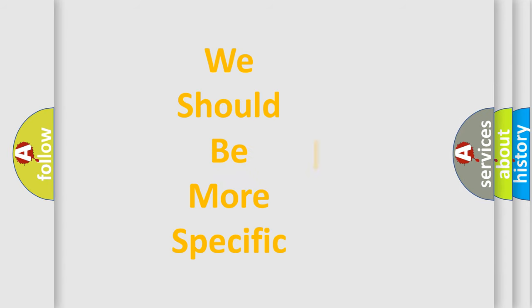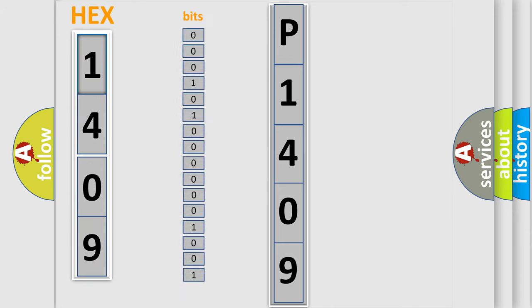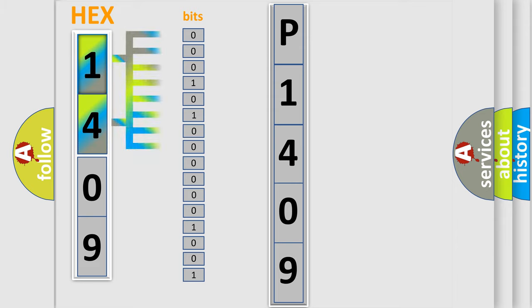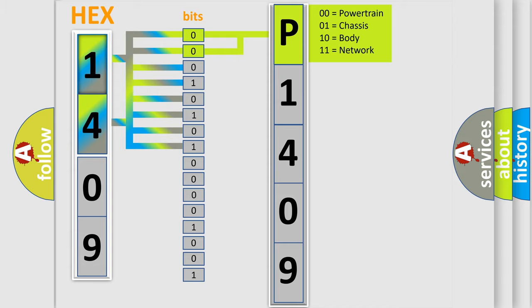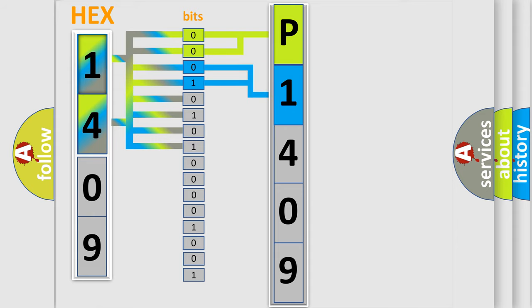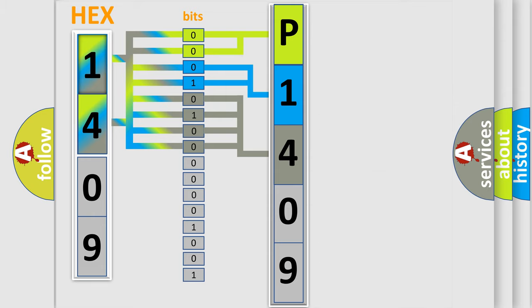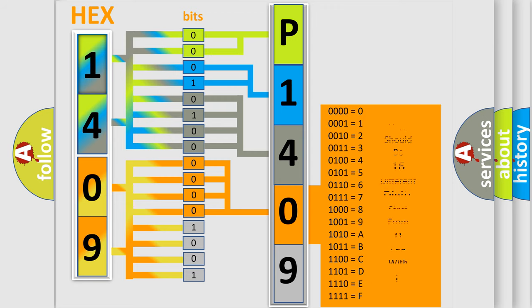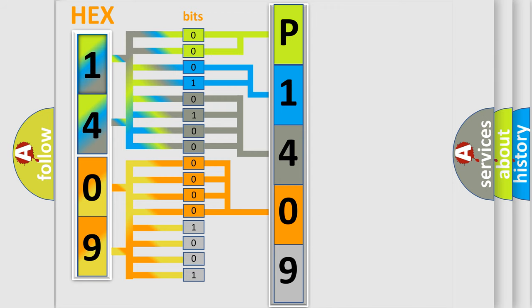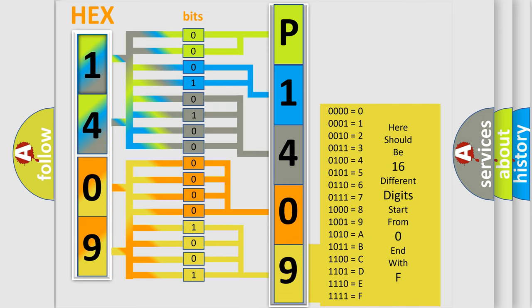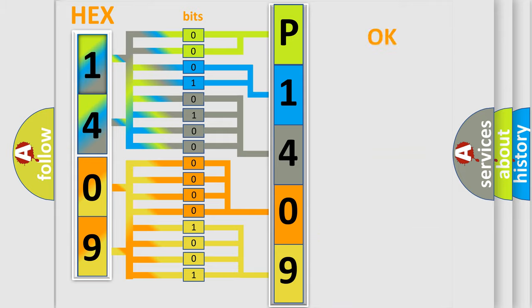The following demonstration will help you look into the world of software for car control units. The error code is split into two bytes consisting of 16 bits. One bit is the basic unit that each computer works with. A bit has two logical states: zero (low level) and one (high level). By combining the first two bits, the basic character of the error code is expressed. The next two bits determine the second character. The last bits of the first byte define the third character. The second byte is composed of eight bits — the first four bits determine the fourth character, and the last four bits define the fifth character. A single byte conceals 256 possible combinations.